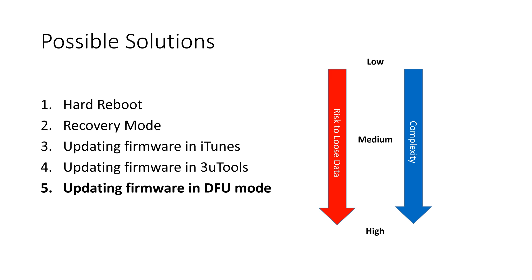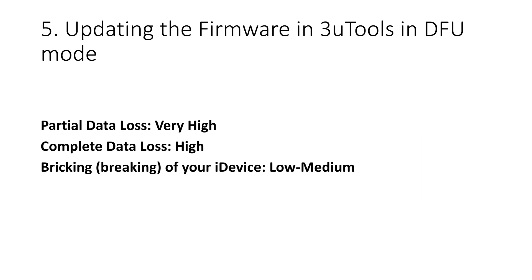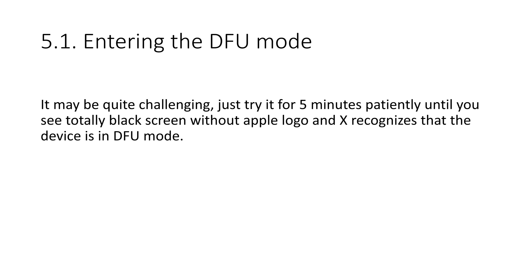The last method, which actually worked for me, was updating the firmware in DFU mode. Before trying this, be aware that it may lead to partial or even complete data loss. Furthermore, if something happens during flashing in DFU mode — such as a power outage, disconnecting the cable, or anything else — you may potentially break your phone so it will no longer be functional at all. I recommend this step only if all previous steps didn't work and you are confident in what you are doing. Because DFU mode is not intended for customers but for service technicians, it is quite tricky to enter and more difficult than entering recovery mode.